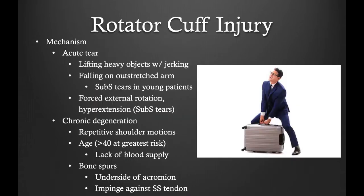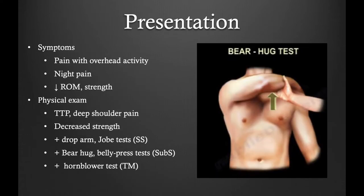Rotator cuff injuries can occur from either an acute injury such as a shoulder dislocation or from chronic degeneration such as chronic overhead activity or weight lifting. The presentation of a rotator cuff tear typically involves pain in front of the shoulder. This is also accompanied by weakness with internal rotation, which manifests as a positive bear hug test and a positive belly press test.